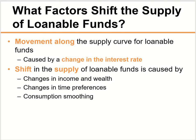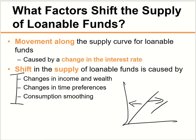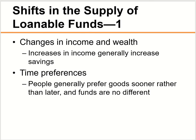Now let's talk about the supply curve for the loanable fund market — what causes movements versus shifts. Just like a regular supply curve, when the interest rate changes, you move along the supply curve from one point to the next. But if these three factors change, the supply curve itself shifts — right for increase, left for decrease. The first factor is income: when consumer income or wealth goes up, we tend to save more money, shifting supply to the right. When income falls, we save less, shifting supply to the left.